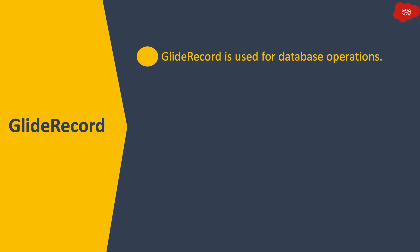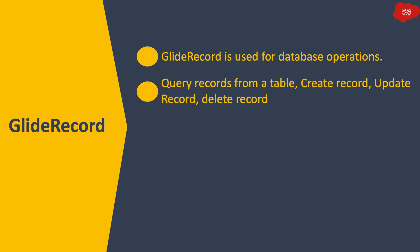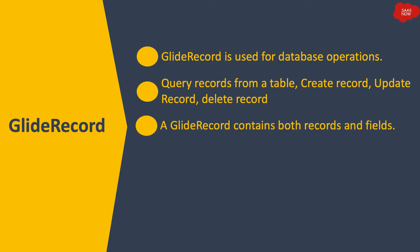GlideRecord is used to perform database operations. Those operations include querying records from a table, inserting a record in a table, updating records in a table, or deleting records from a table. Actual use cases include updating short description in multiple incident records, or creating a new problem from an incident. GlideRecord contains both records and fields.